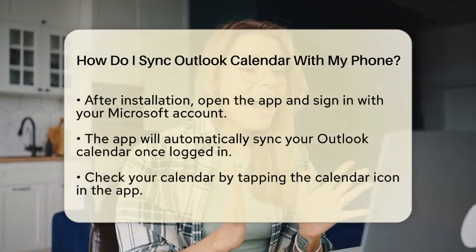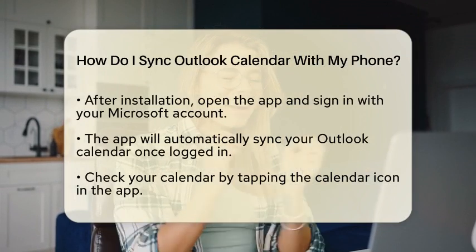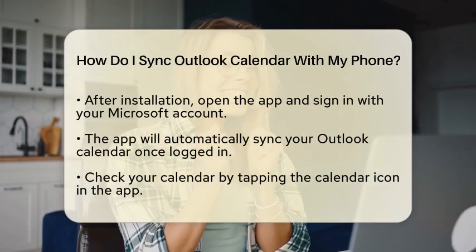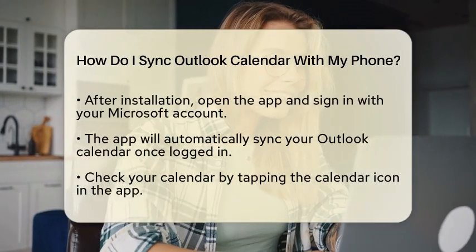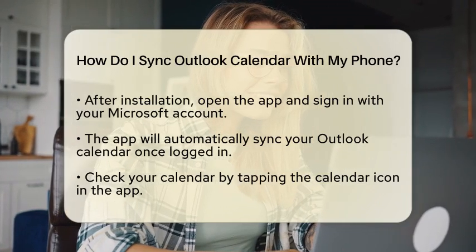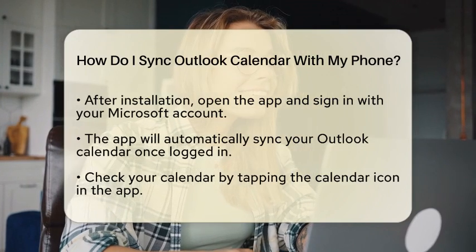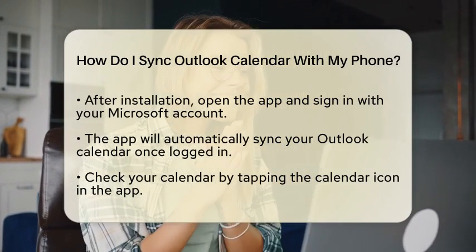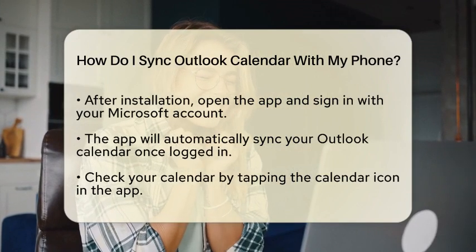For Android users, start by downloading the Microsoft Outlook application from the Google Play Store. Once installed, open the app and sign in with your Microsoft account. After logging in, the application will automatically sync your Outlook calendar with your device. You can check your calendar by tapping on the calendar icon within the app.